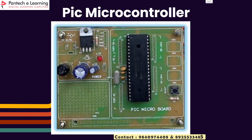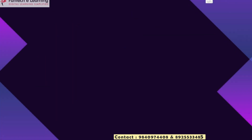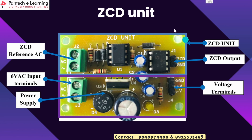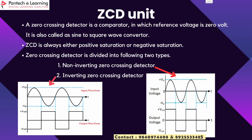This is the PIC microcontroller which we are using in this project, and this is the ZCD unit. Here we can see we need two input AC supply, whether it can be 6V or 12V or anything else, and here we can check the output voltage. This is the power supply section and these are the voltage terminals. A zero crossing detector is the ZCD unit — it is a comparator in which the reference voltage is 0V. It is also known as a sine-to-square wave converter, and this ZCD unit is divided into two parts: non-inverting ZCD and inverting ZCD.